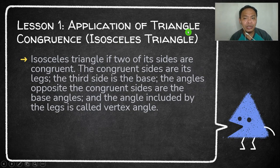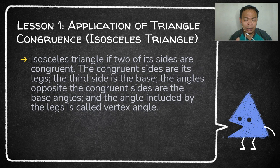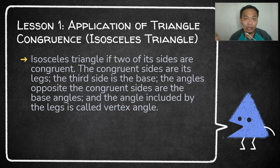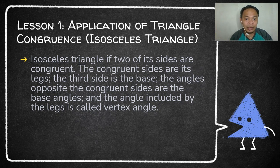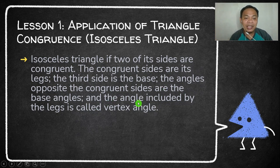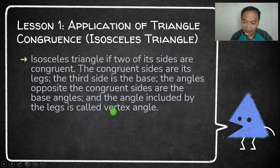For our Lesson 1, we have Application of Triangle Congruence, and we're going to talk about the isosceles triangle. So what is an isosceles triangle? Based on the definition, an isosceles triangle has two of its sides congruent. If there are two sides of a triangle that are congruent, then the congruent sides are its legs.